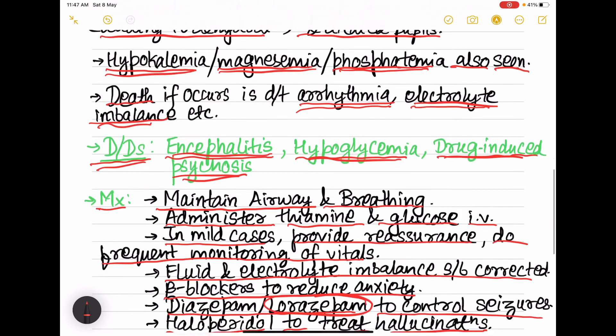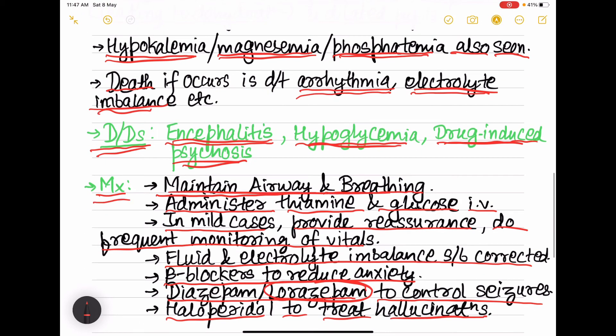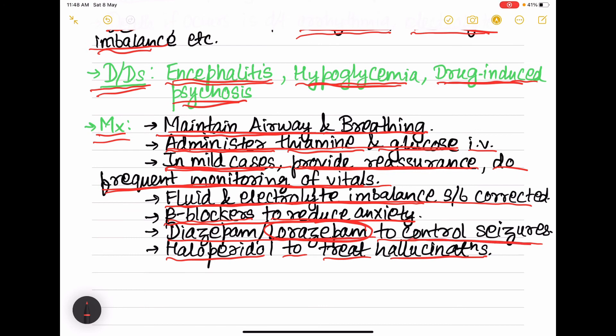And coming to the management, first you have to maintain the airway and breathing, then administer thiamine and glucose, collect the blood samples. In mild cases provide reassurance and do frequent monitoring of vitals. Then fluid and electrolyte imbalance should be corrected. Beta blocker should be given to control the anxiety, then lorazepam to control the seizures, haloperidol to treat the hallucinations.